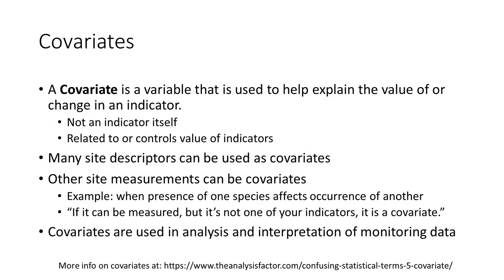A covariate is a variable that is used to help explain the value of or change in an indicator. Covariates are not indicators themselves, but things that we record about a site that are related to, and in some cases control, the value of the indicator. Many of the site descriptors, especially the structured ones like elevation, precipitation, or soils, can be used as covariates. We can also use other site measurements as covariates. For example, cover of perennial grasses at a site might be influenced by the cover and height of encroaching shrubs like juniper or mesquite. Here, the perennial grass cover is the indicator, and the encroaching shrub cover — which we're also measuring at the site — is a covariate. A helpful rule of thumb for determining covariates is: if it can be measured, but it's not one of your indicators, then it's potentially a covariate. Many of the properties we measure or record as site descriptors are often used as covariates in analyzing monitoring data.